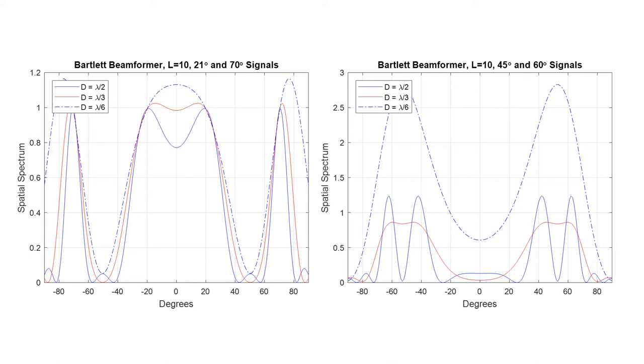With half-wavelength spacing, the spatial spectrum provides the correct angle estimate at 45 and 60 degrees. With lower inner element spacing, however, the antenna elements are closer grouped together, and they don't provide as good of an estimate.